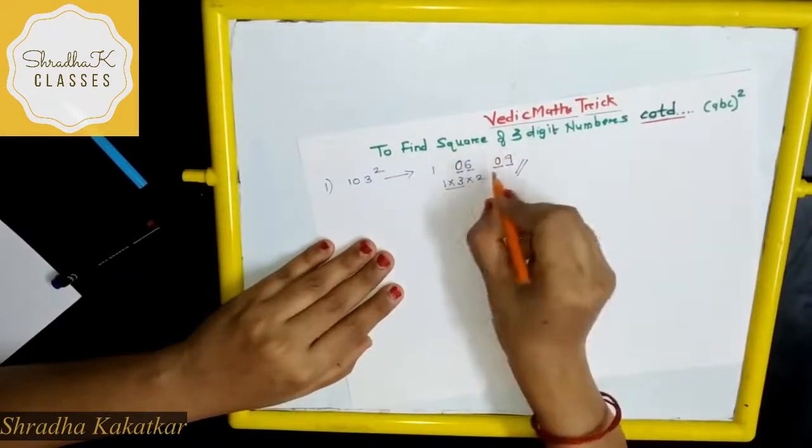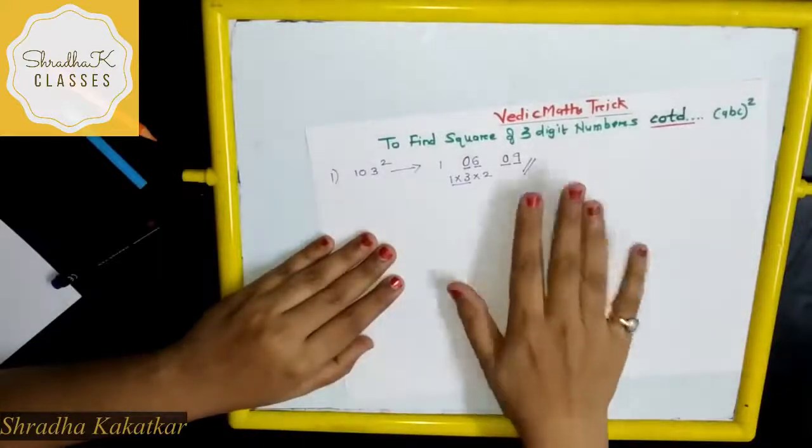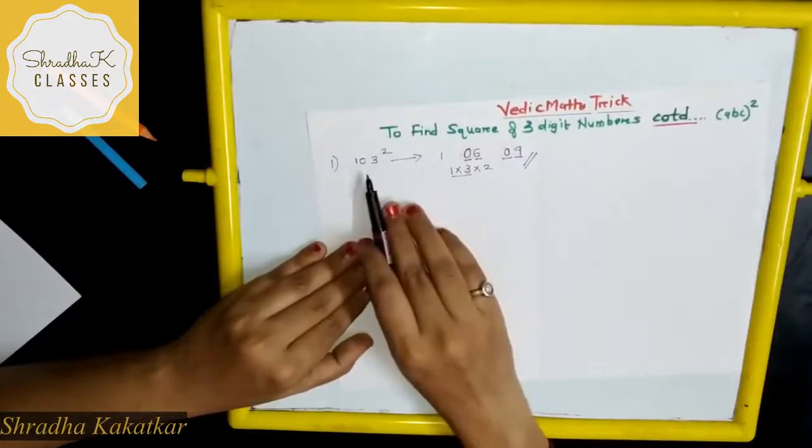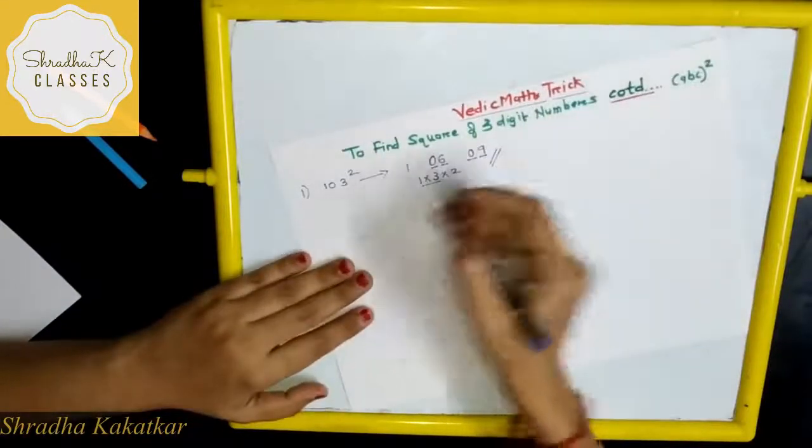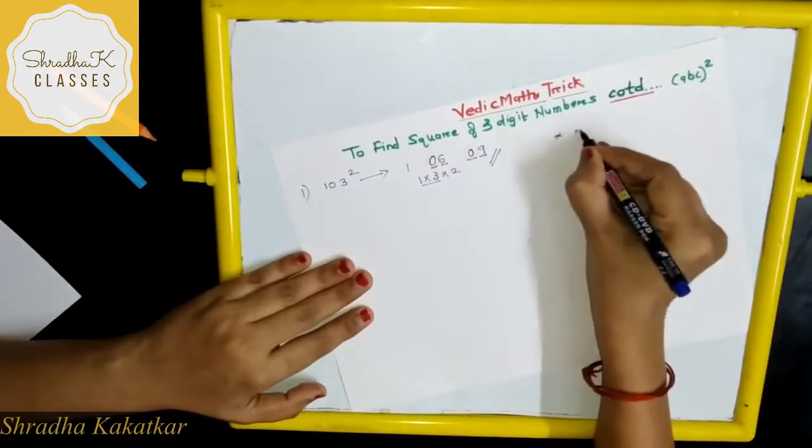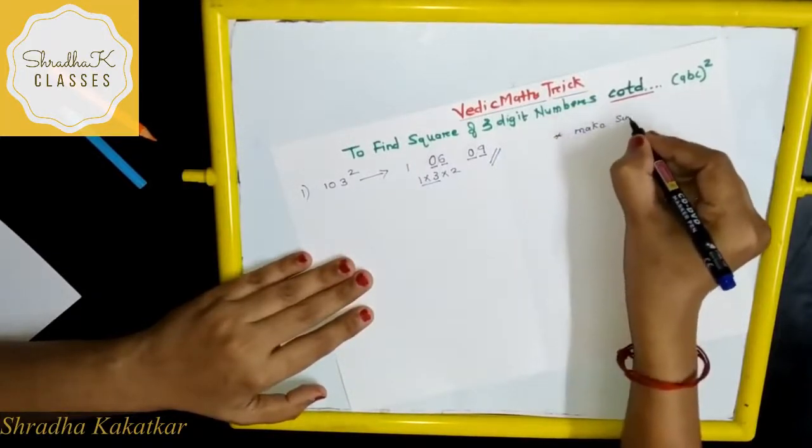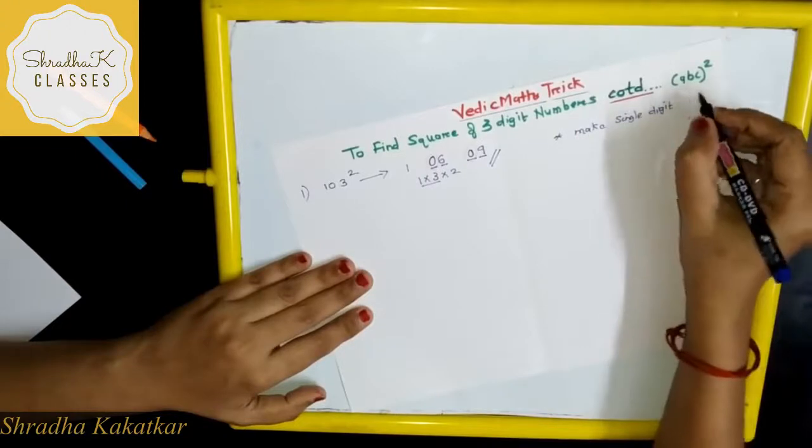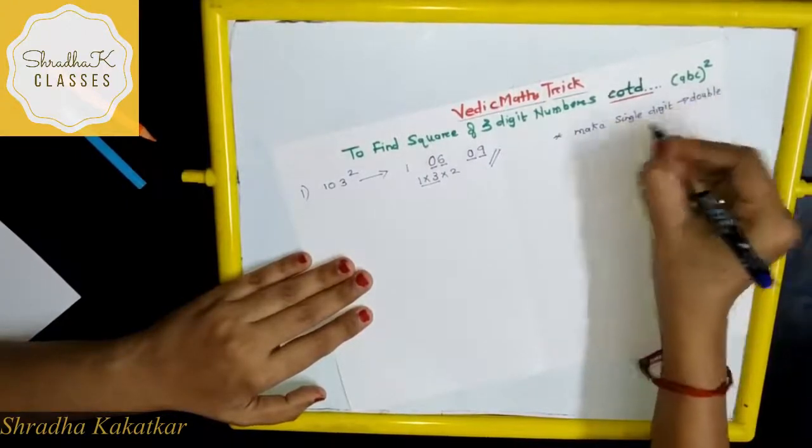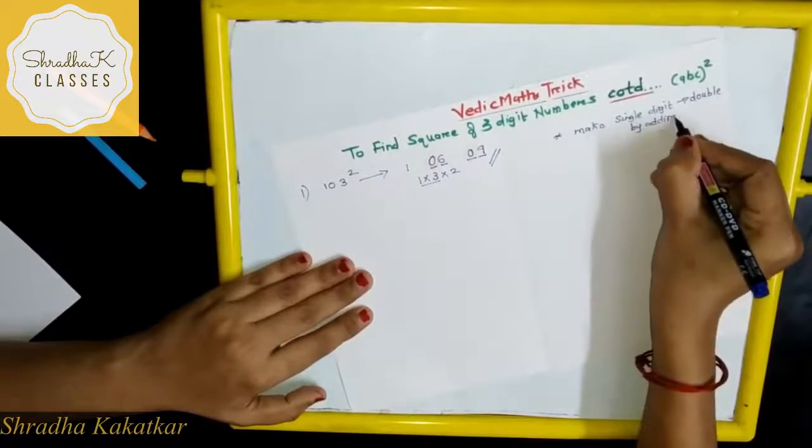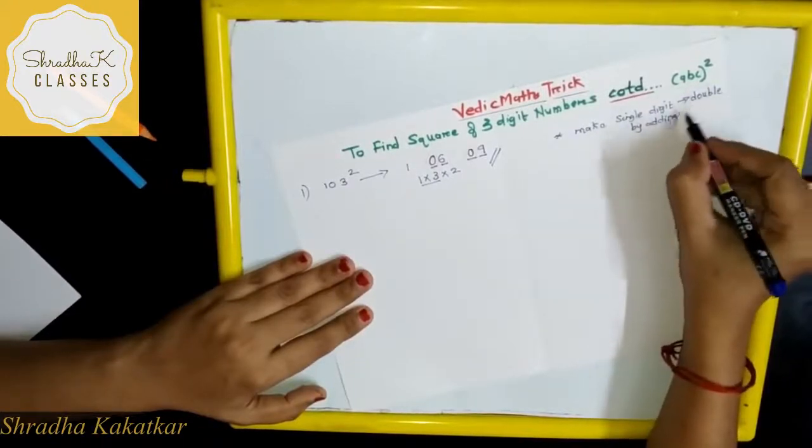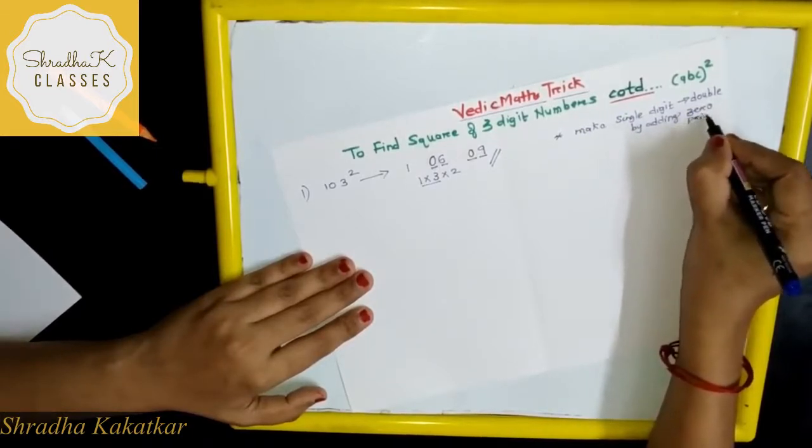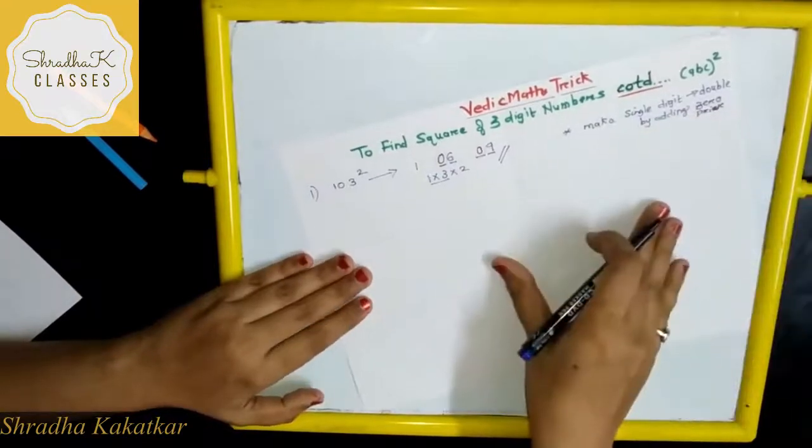What I have done is I have added zero here and zero here to make it a two-digit number. If there is a three-digit number, you have to carry forward. When we find square of three-digit numbers, what you have to remember is make single digits double by adding zero.